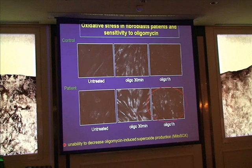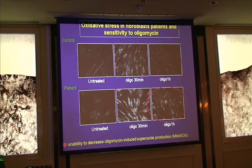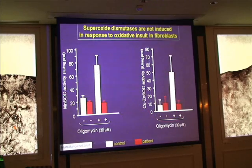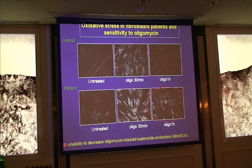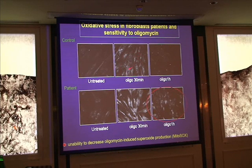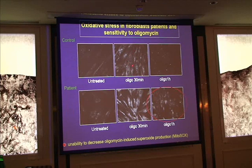More recently, we described something that happens in cells with low frataxin that occurs even before the loss of iron-sulfur clusters. The cells are quite sensitive to oxidative insults, as illustrated here. In control cells treated with the oxidative agent, you see accumulation of the superoxide probe, but after 30 minutes the control cells are able to clear the superoxide.